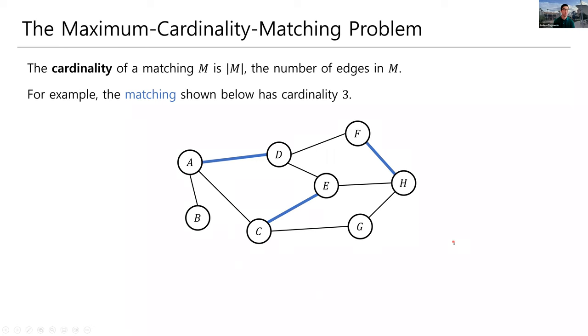It's very easy to define what we mean by maximum cardinality. So the cardinality of a matching is simply the number of edges in M, which we denote as the size of the set M. And so, for example, in this matching that we showed on the last slide, this has cardinality three because it has three edges in the matching.